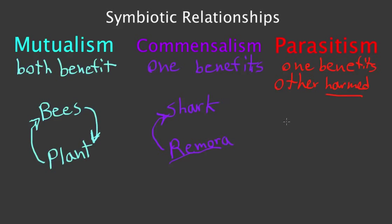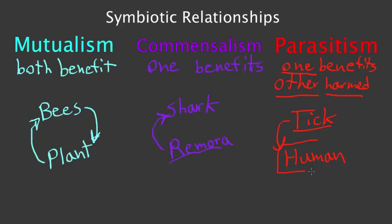Our example for parasitism will be a tick and a human. A tick is able to take the blood of the human, and the tick benefits. But the other organism, the human, is being harmed because the human is losing blood and being hurt by the tick. And those are the three types of symbiotic relationships.